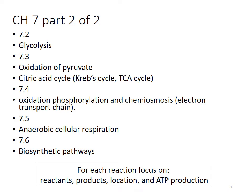This is the second part of chapter 7 — our last chapter 7 video — and it will cover chapters 7.2 through 7.6. We're basically going to cover the reactions in cellular respiration, which include glycolysis, the oxidation of pyruvate, the citric acid cycle, and oxidative phosphorylation and chemiosmosis, and then we'll talk about anaerobic respiration and fermentation and general biosynthetic pathways.